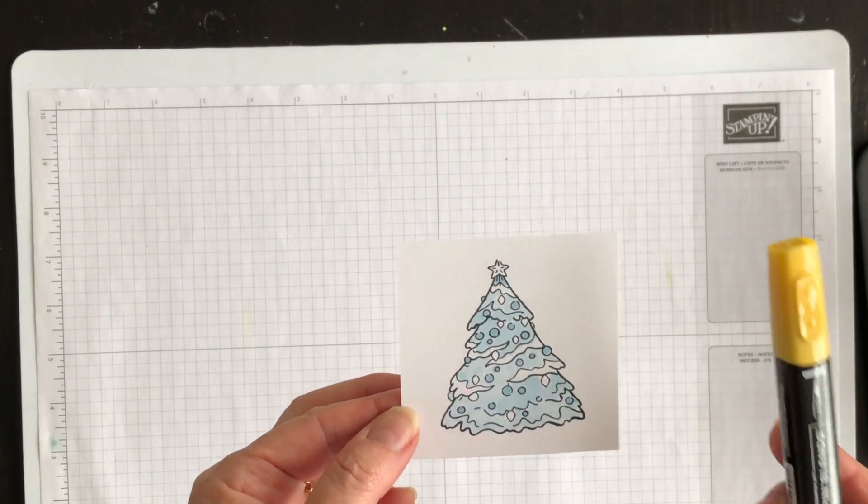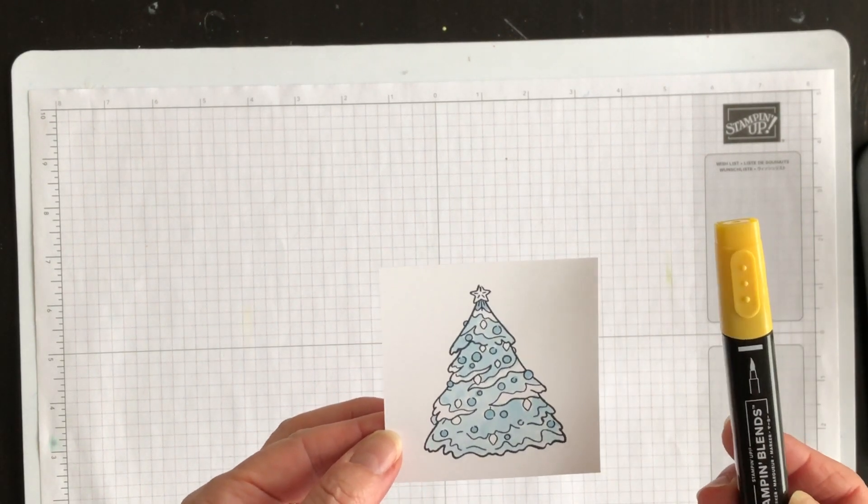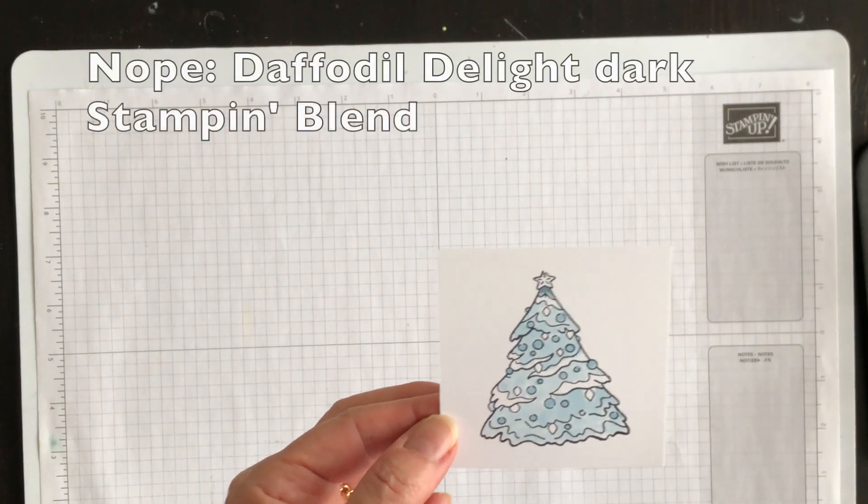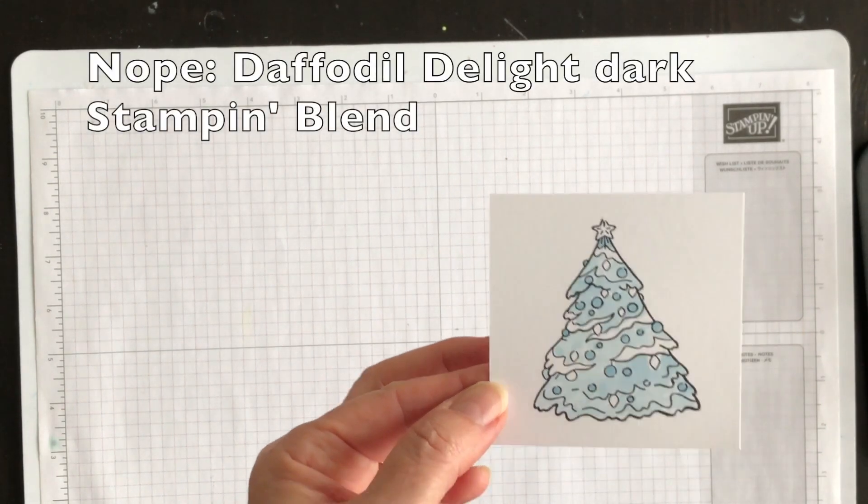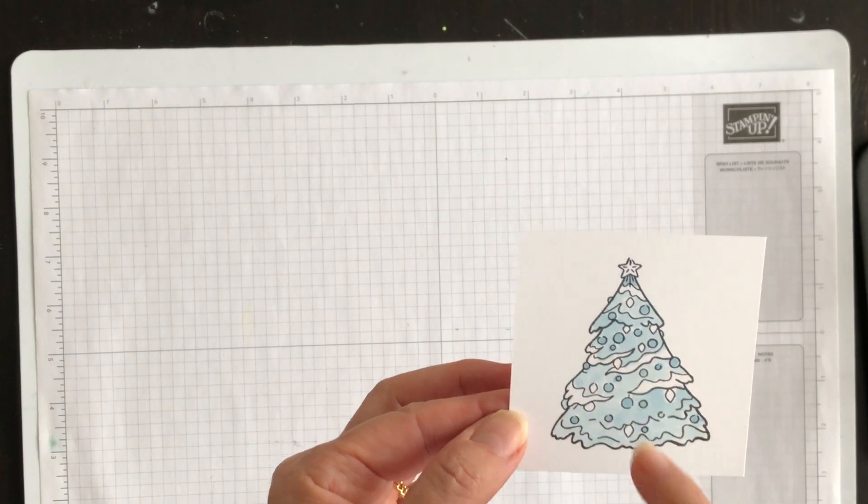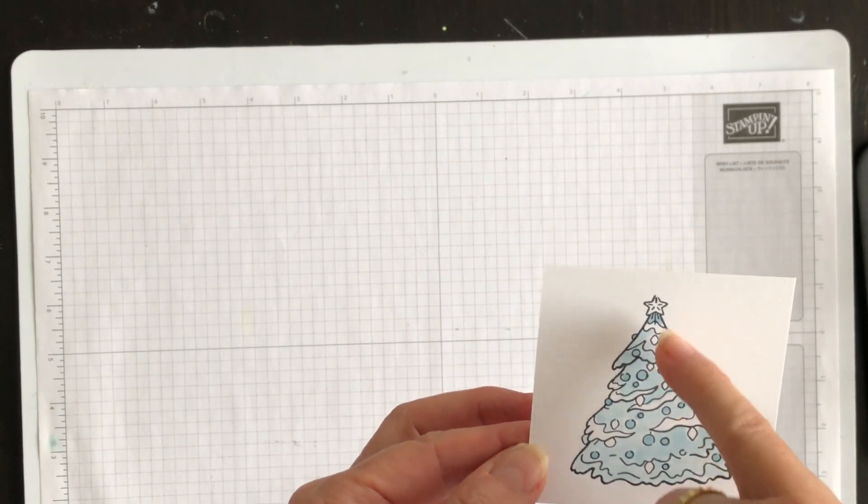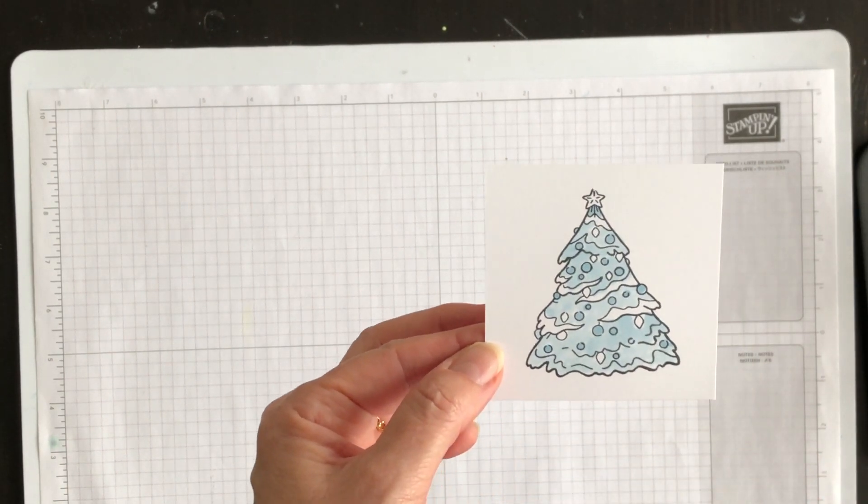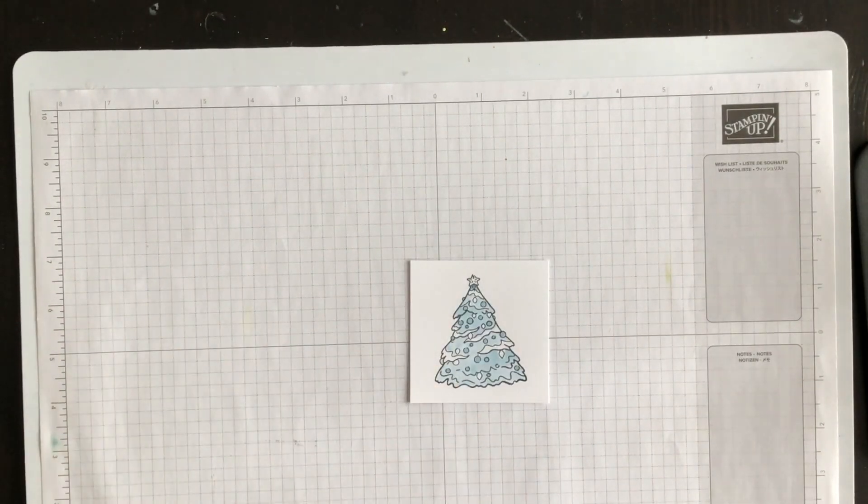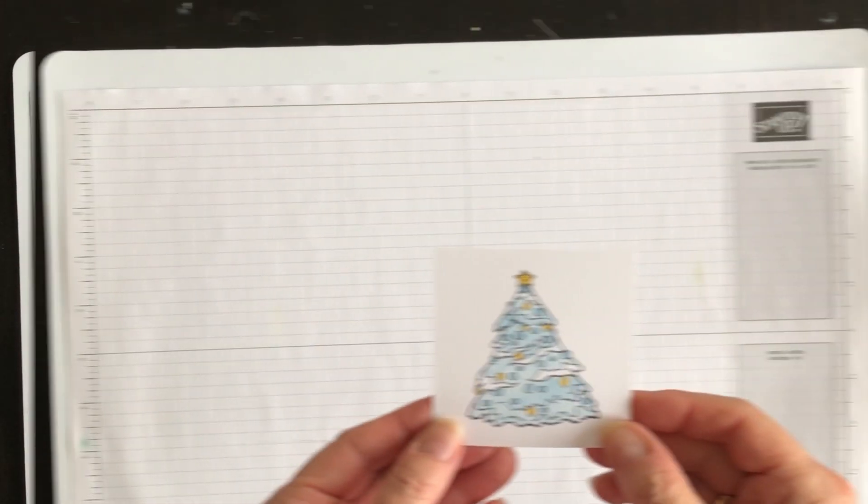Now what I want to do is take my Crushed Curry Dark Stampin' Blend and you can see maybe in the image that there are these Christmas tree lights. So, I'm going to color these yellow along with the star at the top. All right, I have that done.